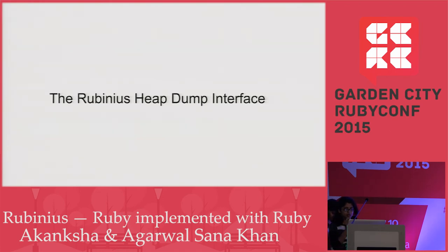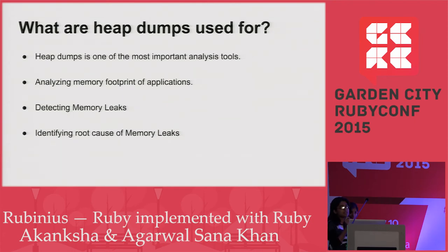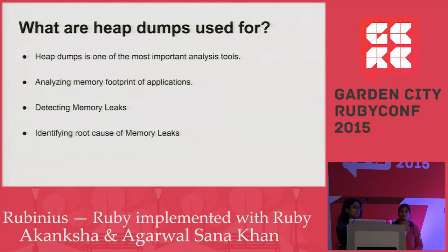Before I start explaining about the heap dump interface, a little background on where heap dumps are used and why. Heap dumps are used for memory analysis of a program or application. They're used in high memory usage applications where you want to find out why your application is consuming so much memory, why it's getting slow, or where a particular method or block of code is allocating a lot of objects but not deallocating them — in short, a memory leak, and you want to find where those leaks are occurring.